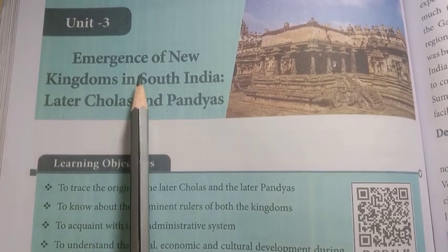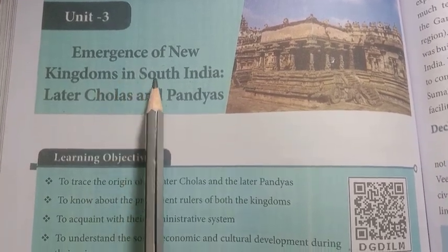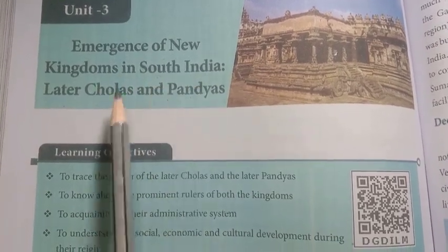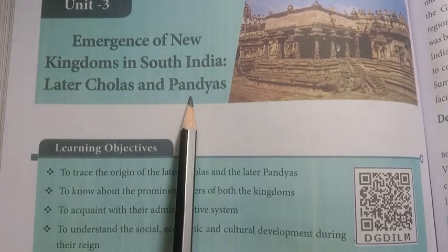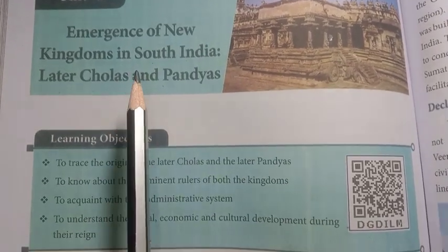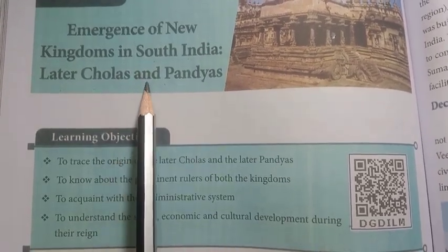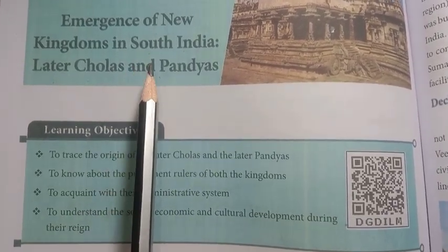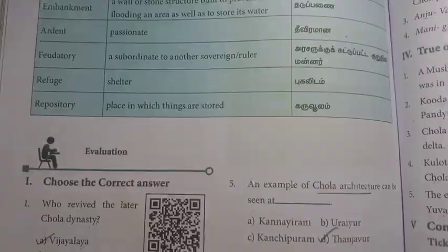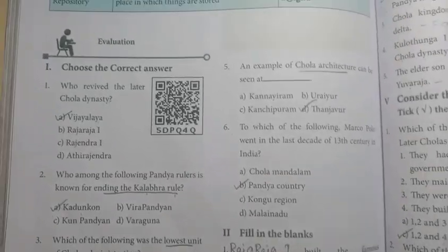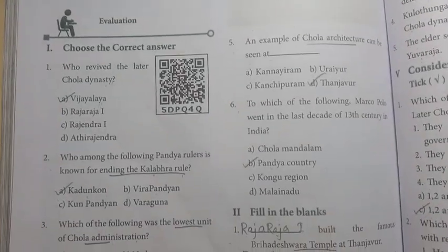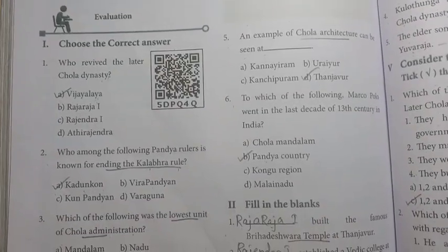The topic is the Emergence of New Kingdoms in South India — Later Cholas and Pandyas. The book back exercise has already been uploaded. So in this lesson, one mark revision and explanation with key points. Page number 130, Roman numeral 1: Choose the correct answer.